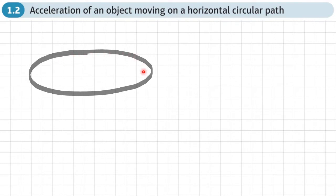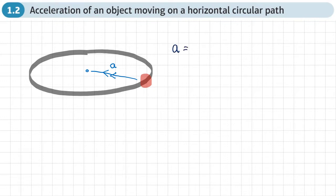Let's imagine this is our circular path, viewed sort of edge on, and we've got a particle moving around in that circular path. We're going to have an acceleration directed towards the center. If we have the angular velocity, that acceleration is equal to the radius times omega squared, where omega is the angular velocity.